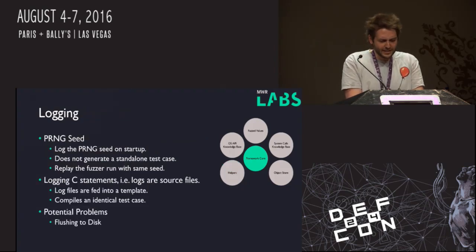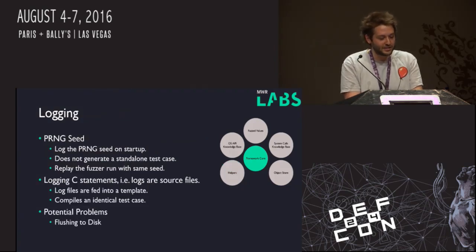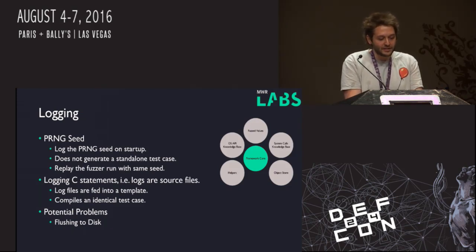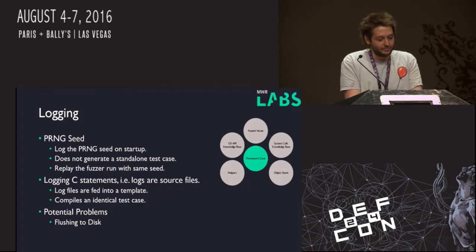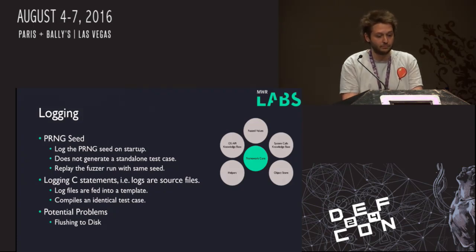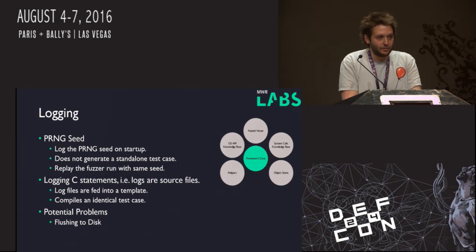Logging is actually quite difficult in kernel fuzzing when you keep hitting crashes. Initially we didn't have high hopes for the fuzzer, so all we did was log a PRNG seed. As a fuzzer we make heavy use of the rand function, so if we can just seed it again we'll always get the same run again, which makes reproducing quite easy. A bit of an issue though is it doesn't generate a standalone test case, which is ultimately where we want to get to.